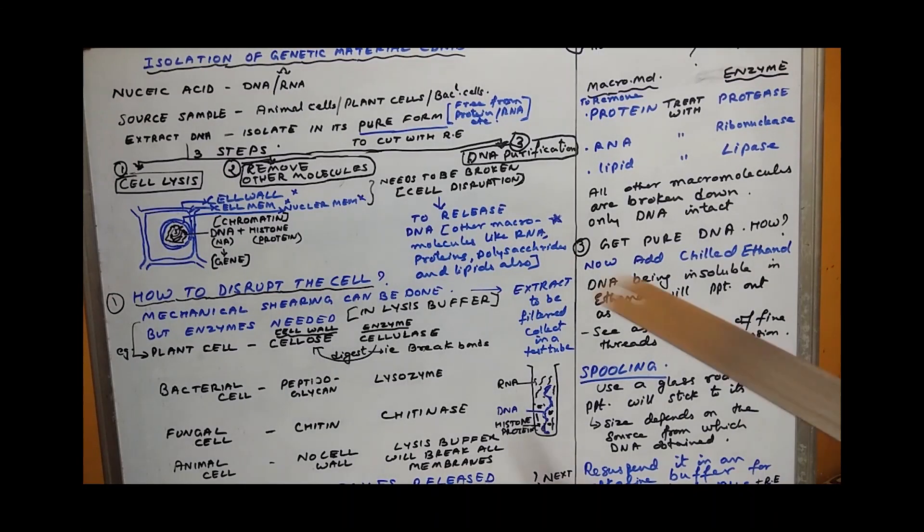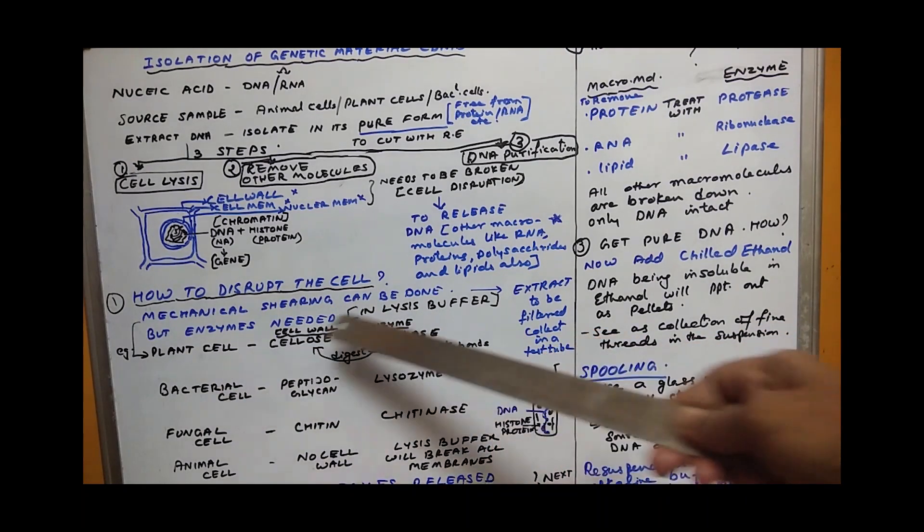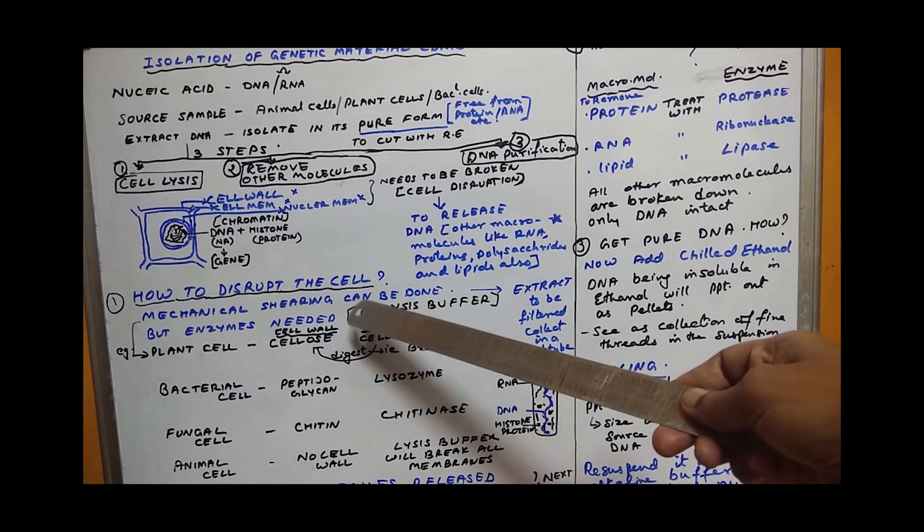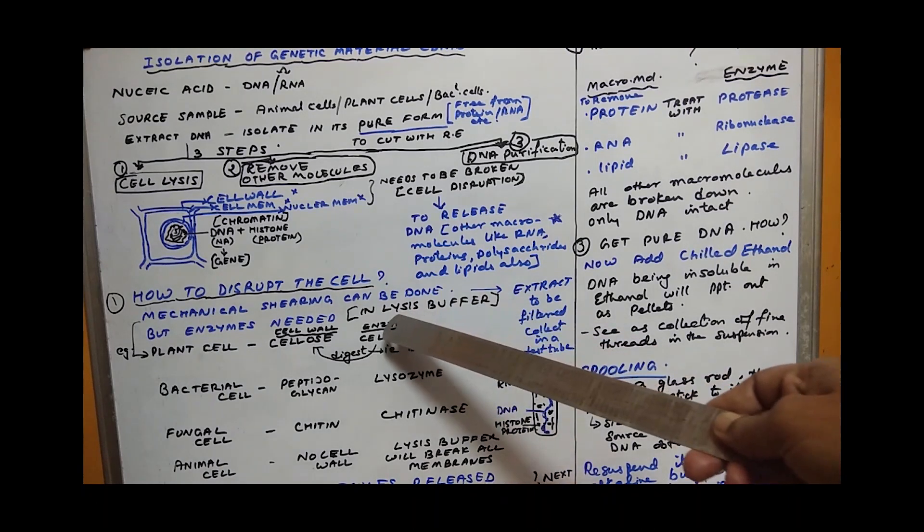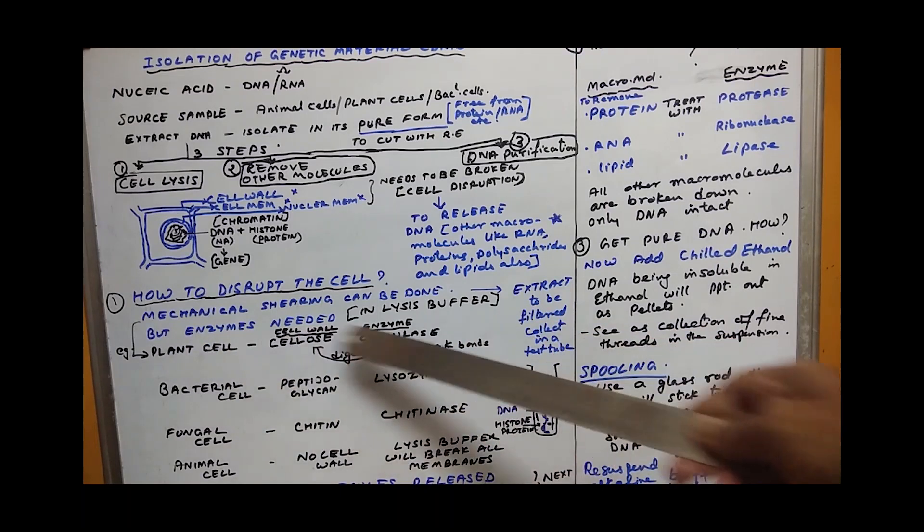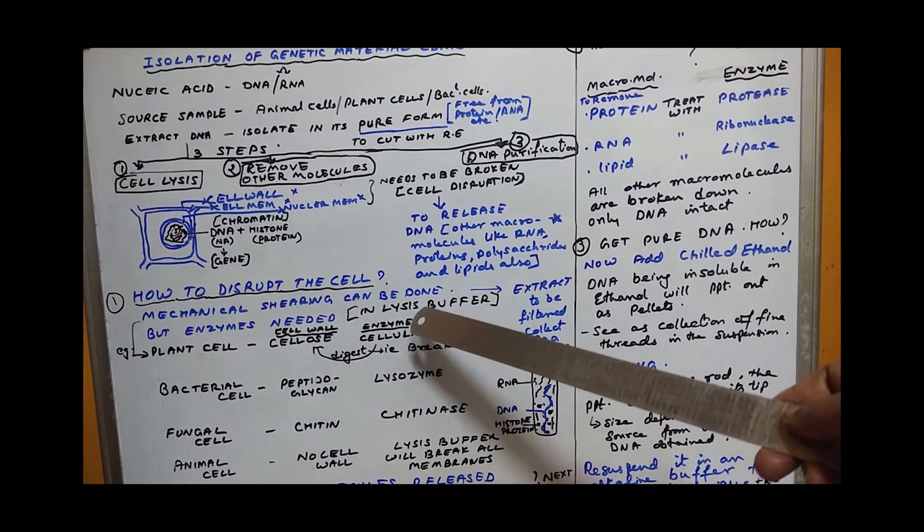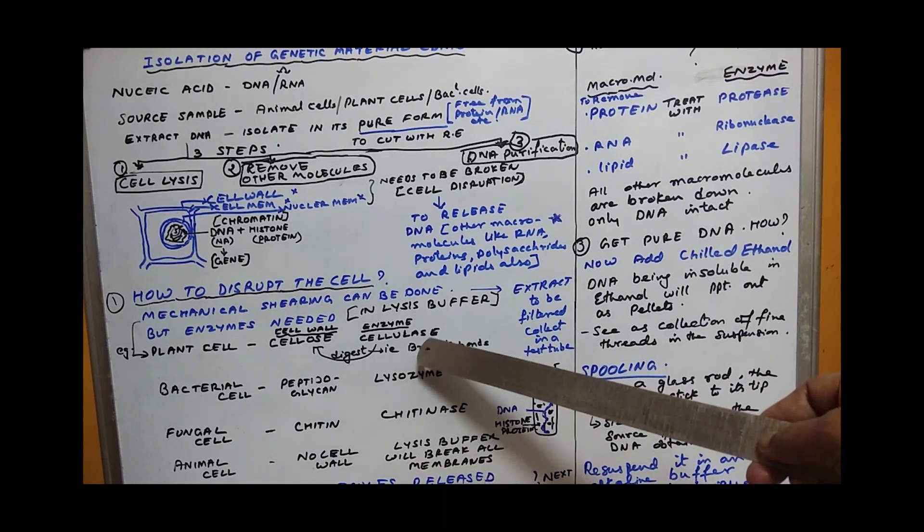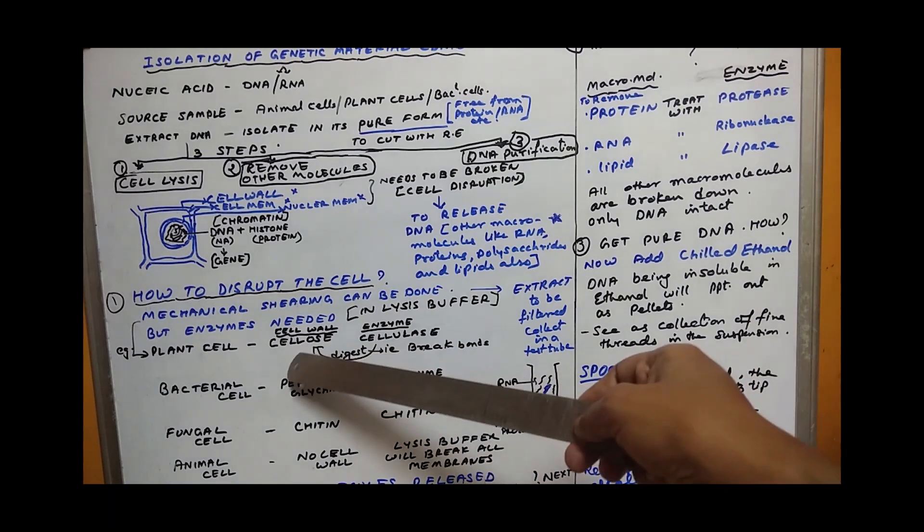How to disrupt the cell? Mechanical shearing can be done. For example, if you are using plant cell you need to grind it in a mortar and pestle. You have to load the content in lysis buffer - buffer having certain chemicals which will break it. But enzymes are needed. Plant cell wall contains cellulose, so enzyme cellulase should be added to digest the large polysaccharide.